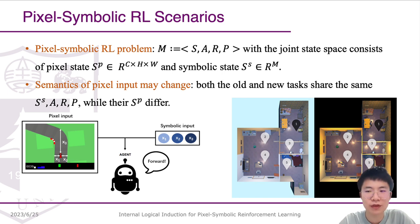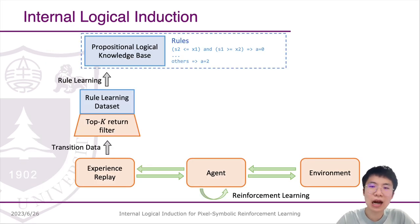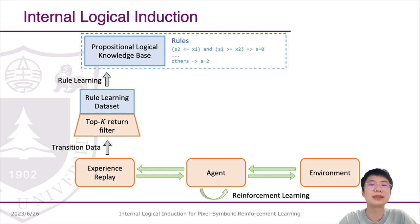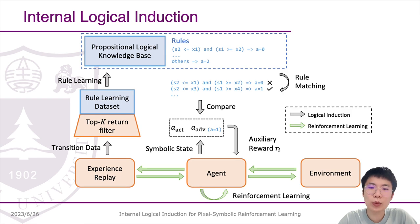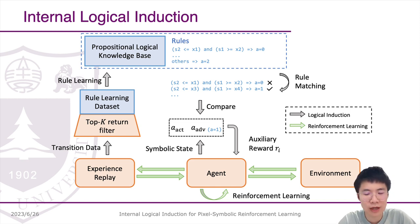To get better sample efficiencies and knowledge transferability, we design a logic induction framework to integrate rule learning and RL. There are three steps. First, we filter out low-quality samples during the RL process to prepare the training dataset for rule learning. Second, we use knowledge-based suggestions as intrinsic rewards to help RL training. Third, we design an adaptive reward-shaping technique that balances the above-mentioned methods.